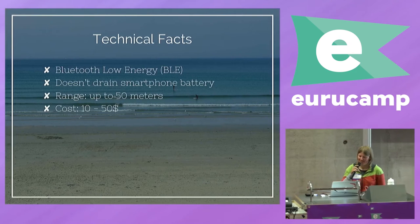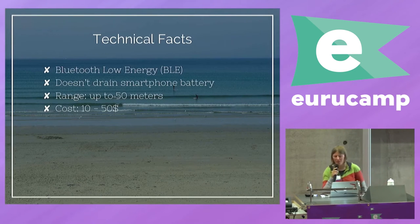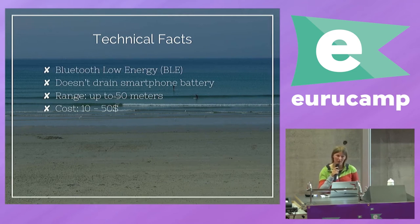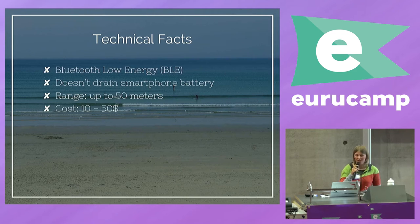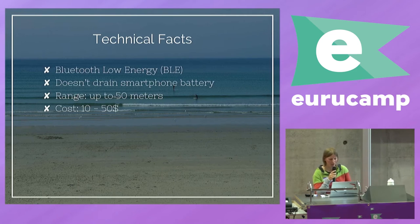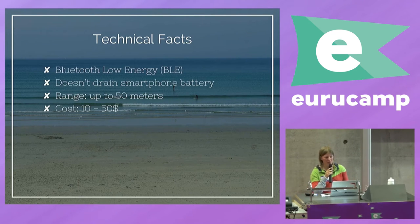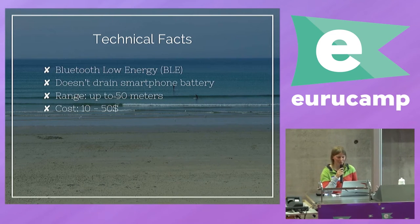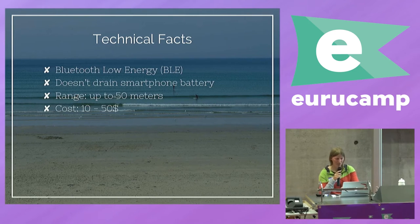Some technical facts. Beacons are based on Bluetooth standards, more precisely on Bluetooth Low Energy. That means it has a lower range than classical Bluetooth and also lower throughput, so it's not for sending data back and forth - it's just good for triggering notifications. A beacon costs around $10 to $50, the range is 10 to 30 meters, up to 50 meters depending on the beacon, and it doesn't drain your smartphone battery if you have it switched on all the time.